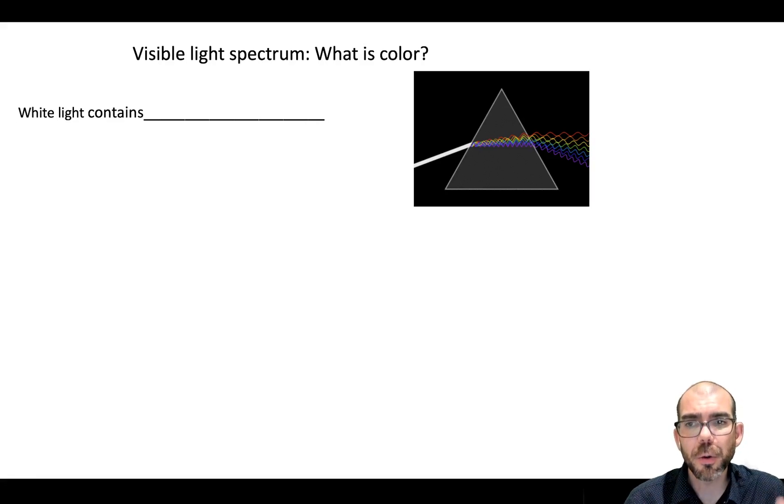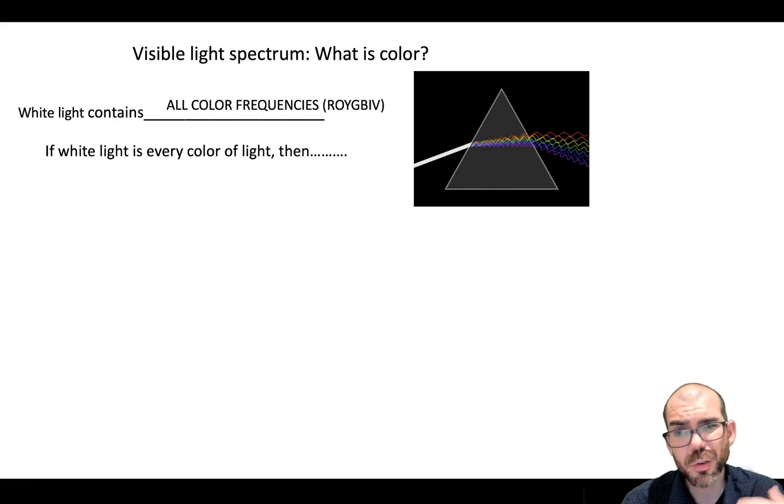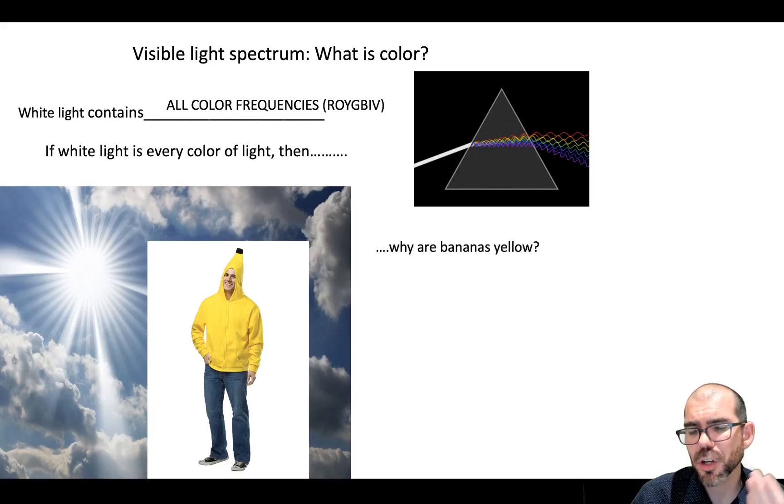When we think about light, know that white light contains all other light frequencies. Roy G. Biv. It has red, orange, yellow, green. So knowing that, if white light shines on a banana, why is the banana yellow?